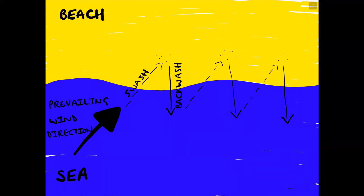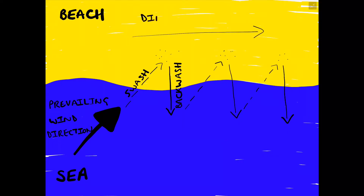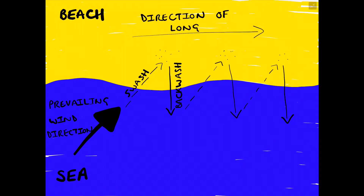So in this particular example, we can see an overall direction of longshore drift moving in a west to easterly direction.